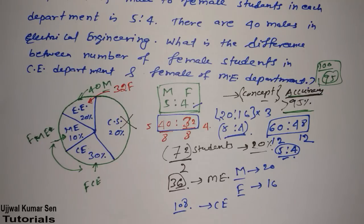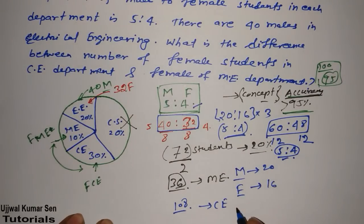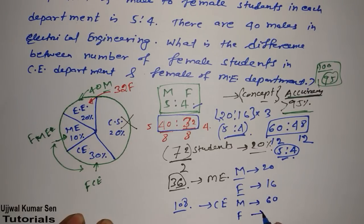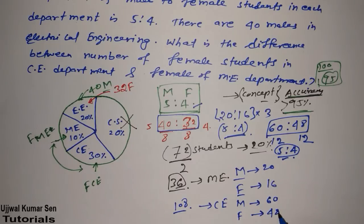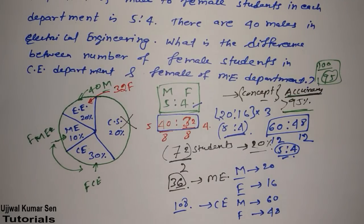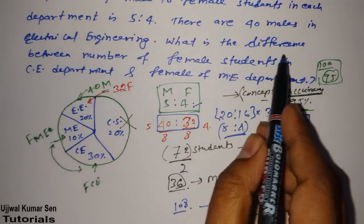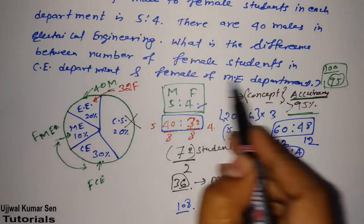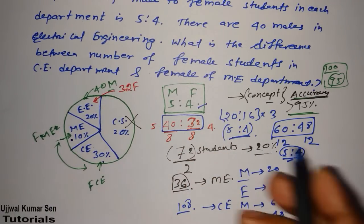So everything we are doing is absolutely right — no need to worry, we are on the right path. From this ratio we can say that for civil engineering: male candidates are 60 and female candidates are 48. Now, going back to the question — what is the difference between female students in civil engineering and female students in mechanical engineering?